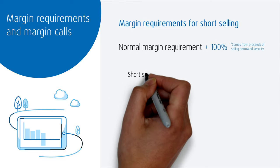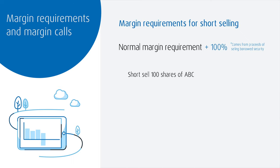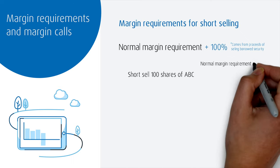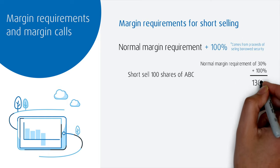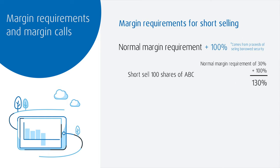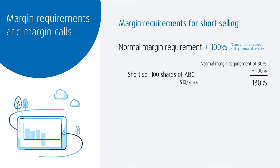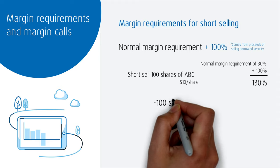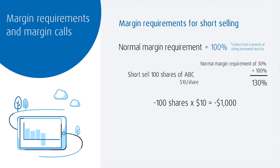So if you wanted to short-sell 100 shares of stock ABC that had a normal margin requirement of 30%, the short-selling margin requirement would be 130%. Let's say stock ABC is $10. The total trade value would be short 100 shares times $10, which is short $1,000.